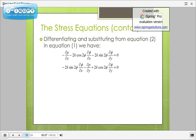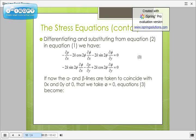P is the normal or hydrostatic pressure on two planes of yield shear stress. Differentiating and substituting from equation 2 in equation 1, we have the following equation. If now the alpha and beta lines are taken to coincide with 0x and 0y at 0, that we take phi equals zero, equation 3 becomes minus dp by dx minus 2k d phi by dx equals zero and minus dp by dy plus 2k d phi by dy equals zero.